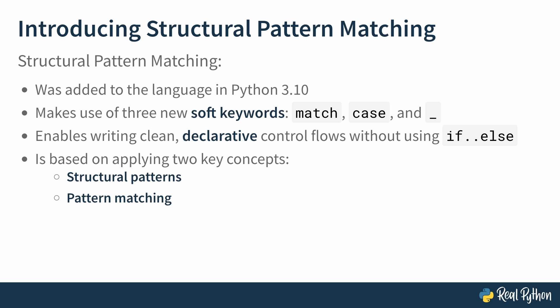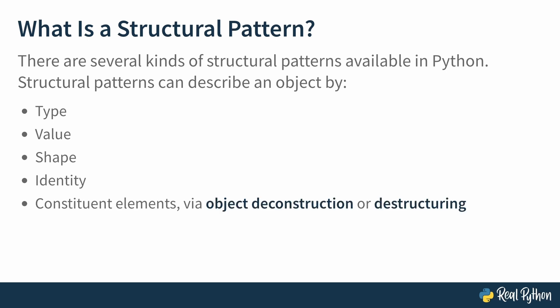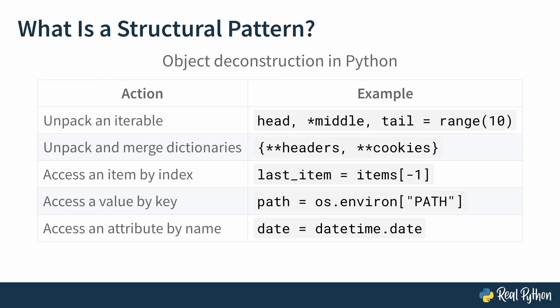First, let's look at structural patterns. There are several kinds of structural patterns available in Python. Structural patterns can describe an object by its type, its value, its shape, its identity, or, getting more complex here, its constituent elements. And this can be done via object deconstruction, which is also called destructuring. Destructuring is not new to Python. You've probably used it yourself.